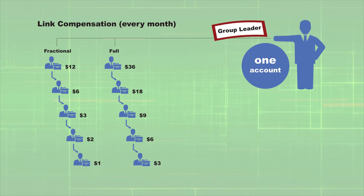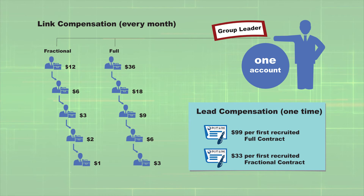When recruiting new promoters, their account and first contract is created and placed on your first level. If they choose to purchase additional contracts, they will be placed underneath them on their first contract's first level. If your new promoter chooses a full contract as their first contract, you will receive $99 for sponsoring them. If your new promoter chooses a fractional contract as their first contract, you will receive $33 for sponsoring them.